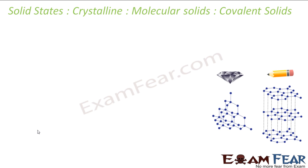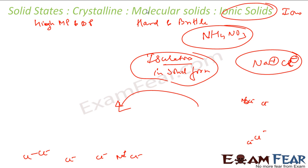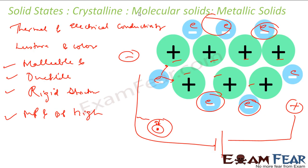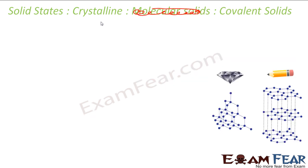Let's talk about the last type of crystalline solids — covalent solids. A correction here: ionic solid and metallic solid are not subcategories of molecular solids; they are all directly part of crystalline solids. Molecular solids have their own three parts — polar, non-polar, etc. Covalent solids are also called network solids because of the strong network they form, as you can see in the diagram.